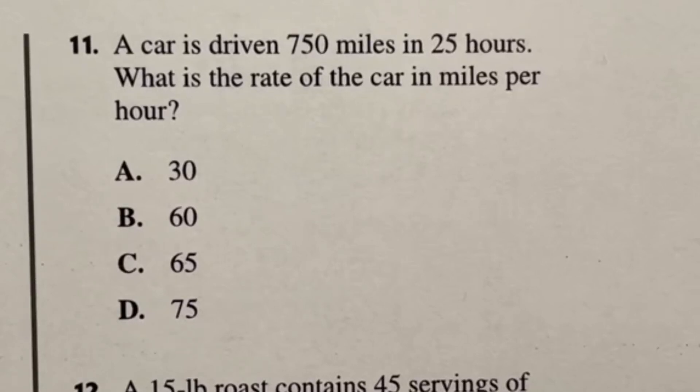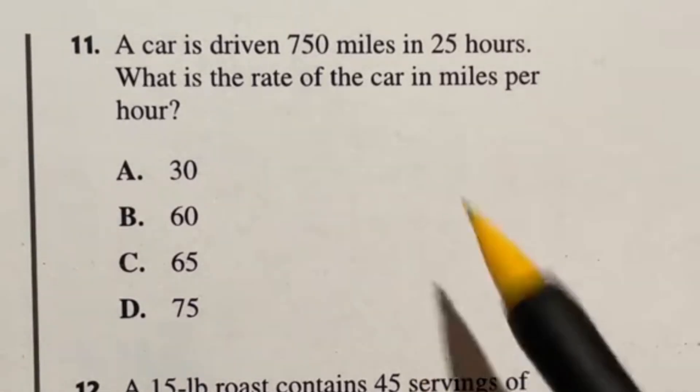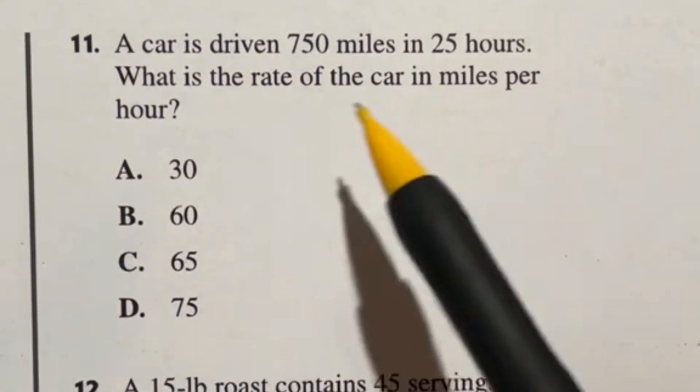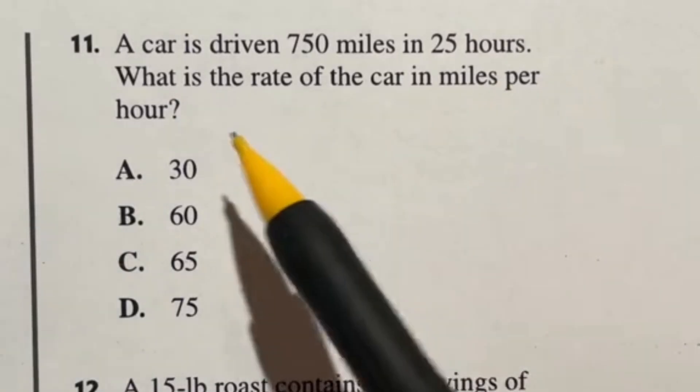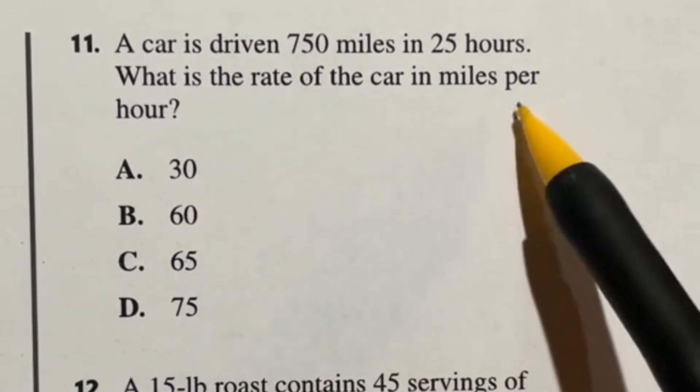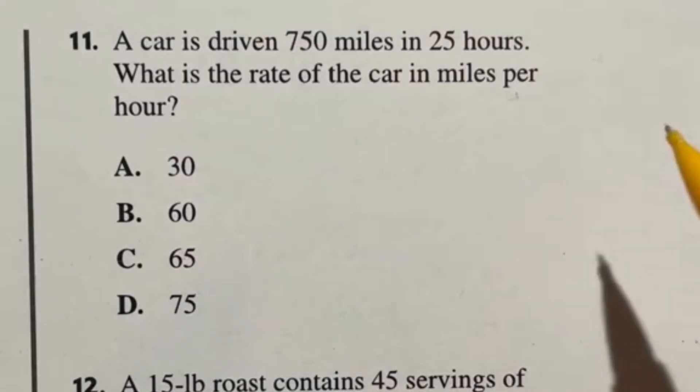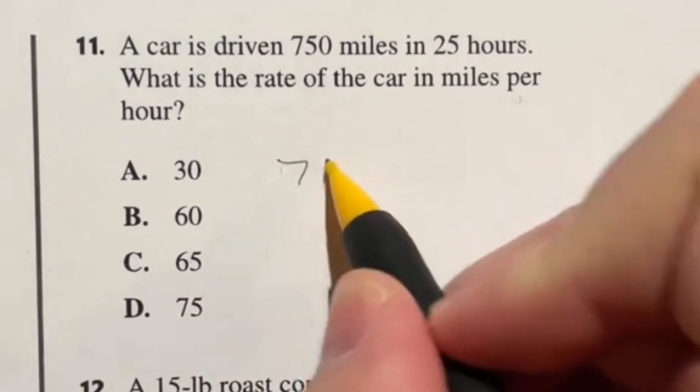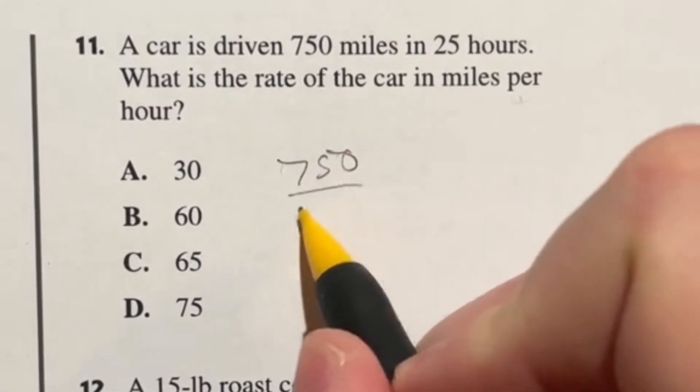Question 11 should be an easy one. It says that a car is driven 750 miles in 25 hours. What is the rate of the car in miles per hour? So if you're trying to find miles per hour, the word per here usually implies that you're dividing. So in this case, we are looking at 750 divided by that 25.